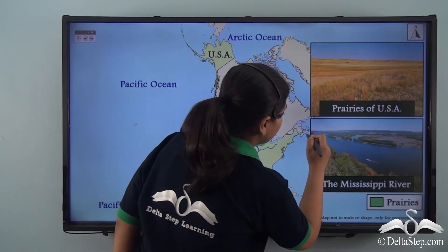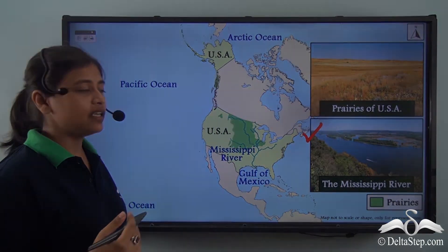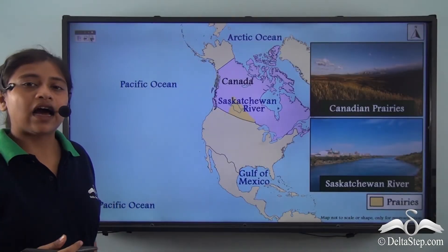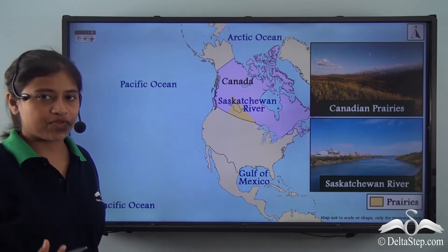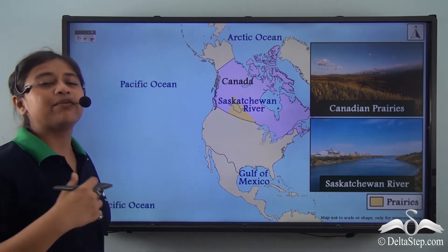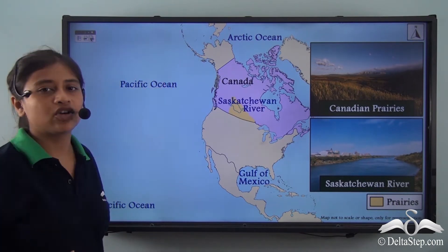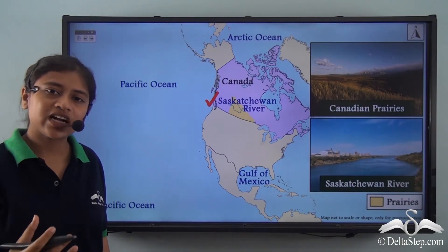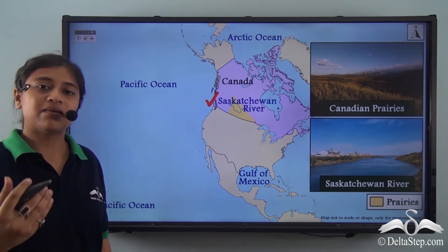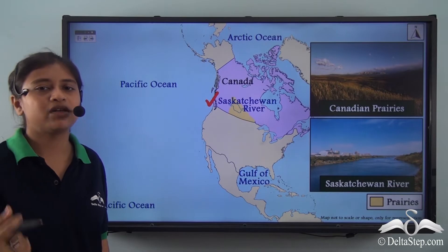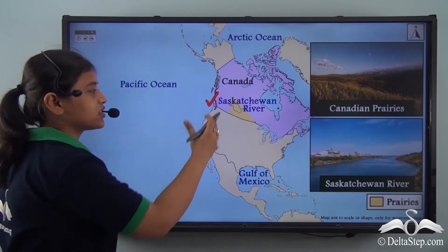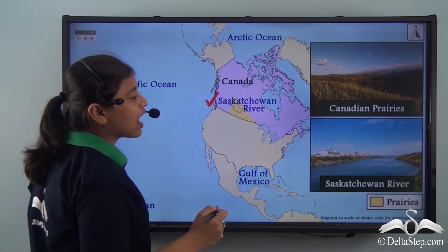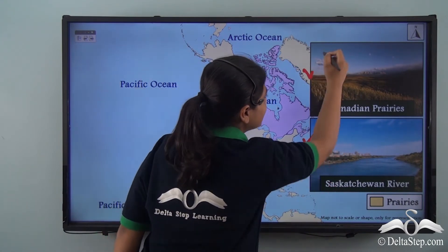Here we have a picture of the Mississippi River and the prairies of the United States of America. The Canadian Prairies are drained by a very important river in the northern part of the continent — the Saakshuan River. The water from this river is mostly used for agricultural and irrigational purposes, but sometimes also for industrial and municipal purposes. The Canadian Prairies, drained by this river, are therefore agriculturally very productive.